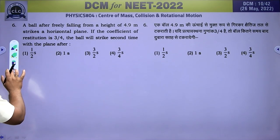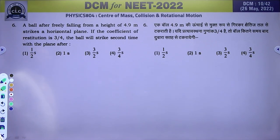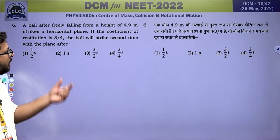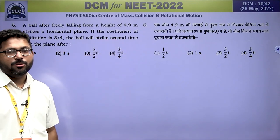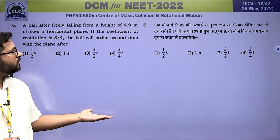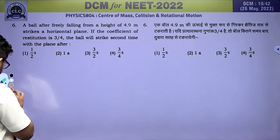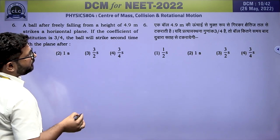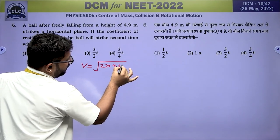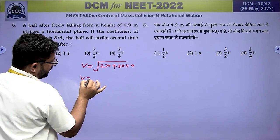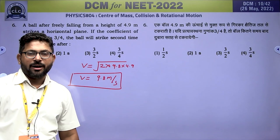Next question: a ball after freely falling from a height of 4.9 m strikes a horizontal plane. The coefficient of restitution is 3/4. The ball will strike the second time after how long? First, velocity of strike: v = √(2g × 4.9) = √(2 × 9.8 × 4.9) = 9.8 m/s.